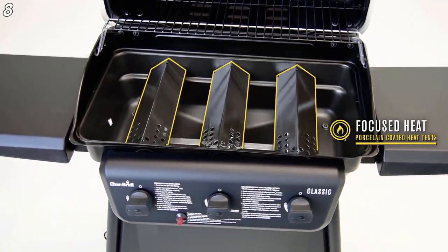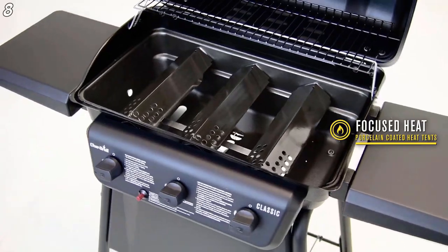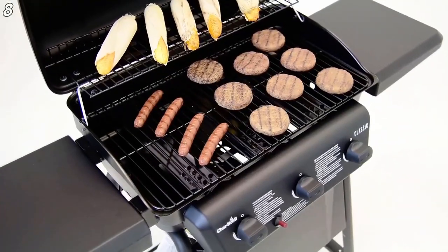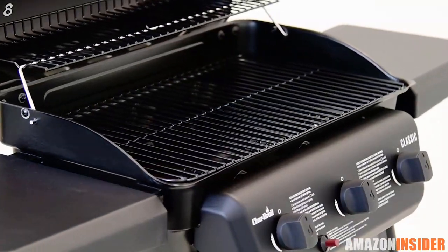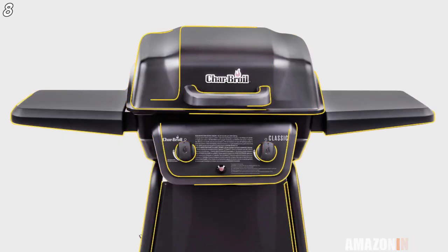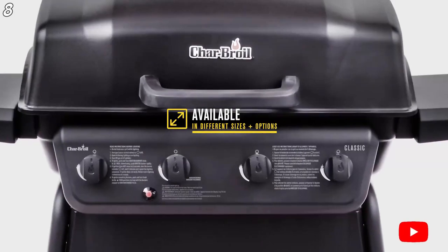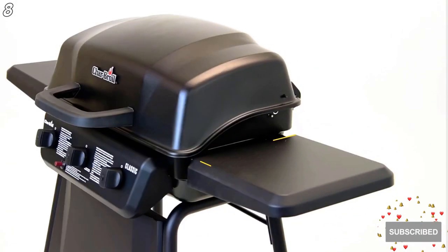The stainless steel burners provide an even heat across the cooking surface. Porcelain coated heat tents protect the burners and keep the heat focused where it should be, on your food. The durable porcelain coating on the cooking grates make them rust resistant and easy to clean. With the Char-Broll Classic Series, choose from 2, 3, and 4 burner options to suit all your grilling needs.